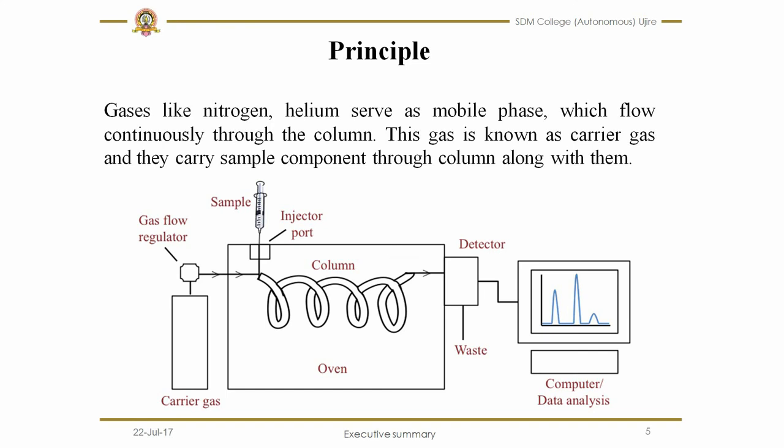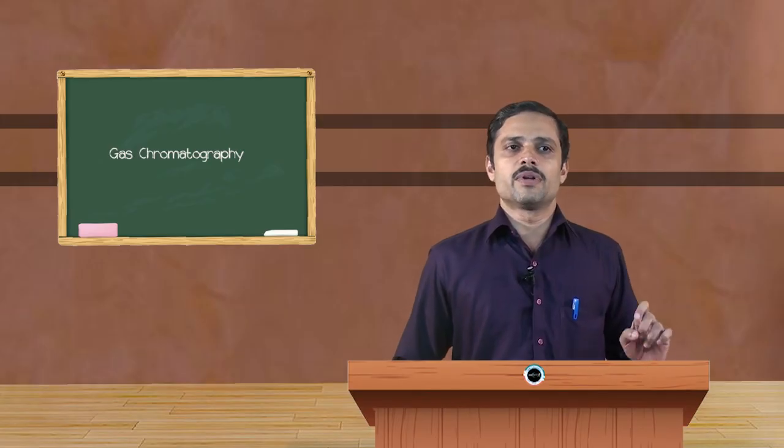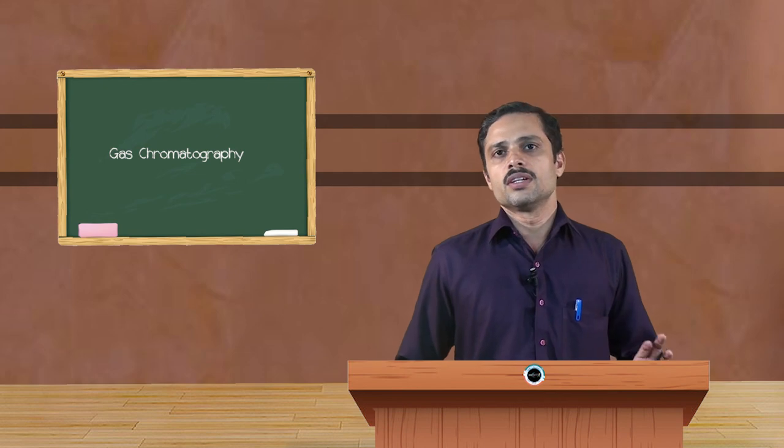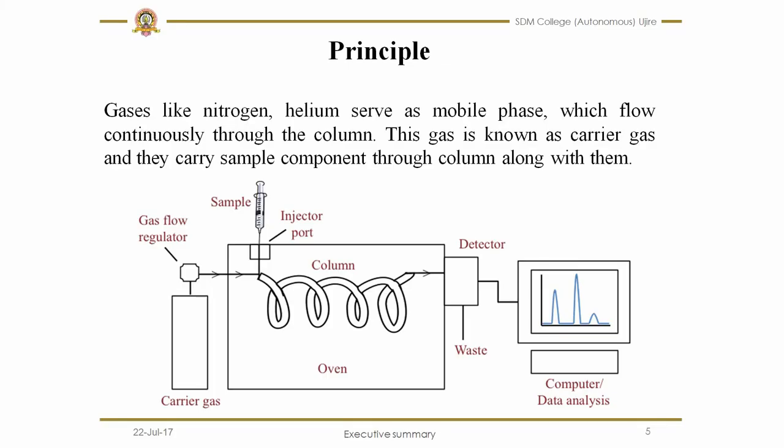As we can see in the diagram, it contains an oven where the column is fitted inside the oven and it has an injector port where the sample can be injected through a syringe. That syringe is of different kinds. Usually, we will inject the sample in microliters. We can inject either liquid or the gas.